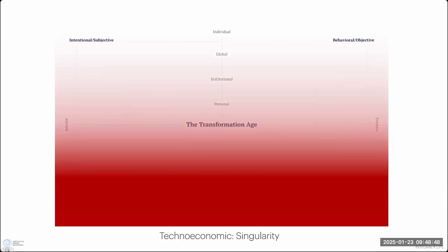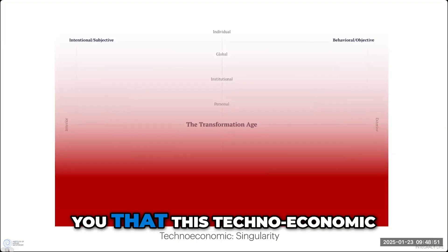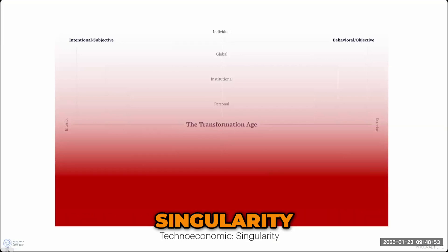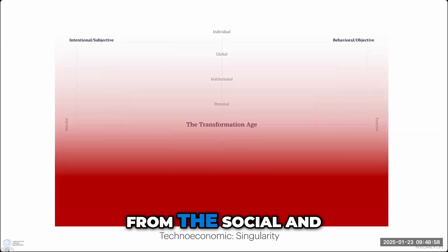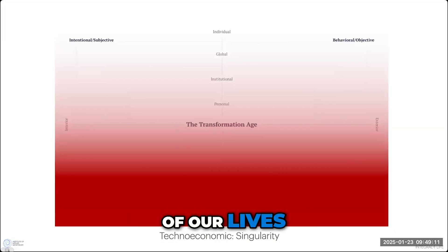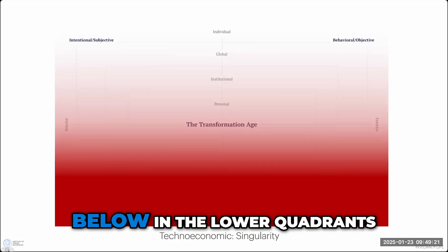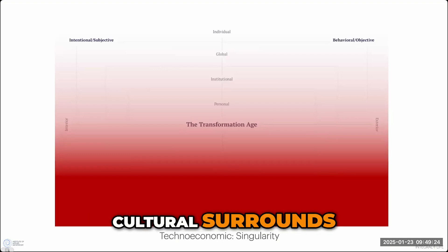So, this slide is showing you that this techno-economic singularity is this extraordinary set of forces that are going to come up from the social and cultural structures and increasingly set the background surround of our lives, which is really what this slide is. At the top is the agent or the individual and below in the lower quadrants is our social and cultural surrounds.